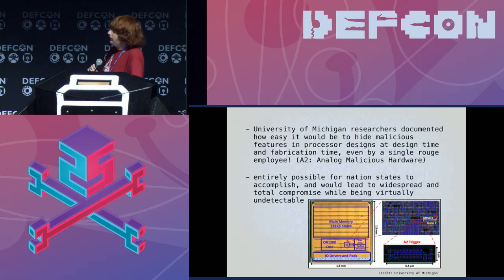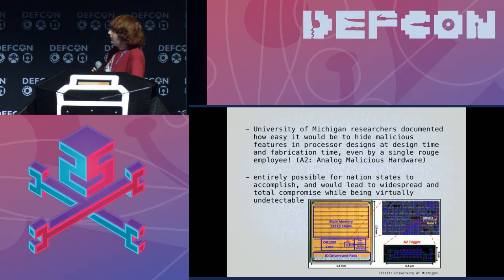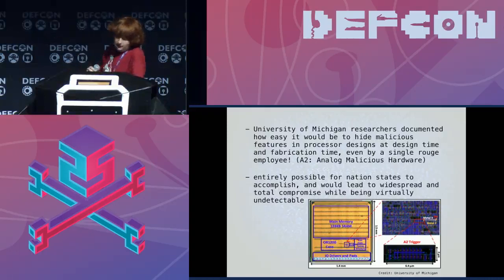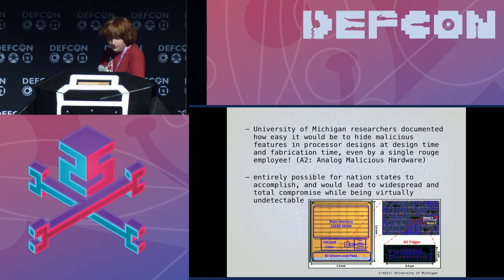The University of Michigan in their paper 'A2: Analog Malicious Hardware' documented that it is all too easy for a single employee to backdoor a chip at the fabrication center. There's a slide from them talking about their A2 trigger that causes all sorts of security concerns if implanted. I believe it's entirely possible for nation states to accomplish — it would lead to widespread total compromise while being virtually undetectable.